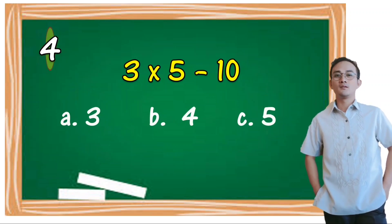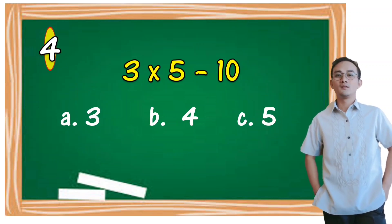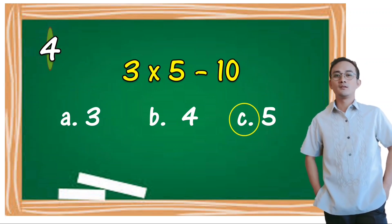3 times 5 minus 10. A) 3, B) 4, C) 5. The correct answer is letter C, 5.